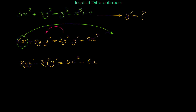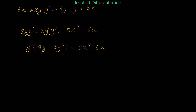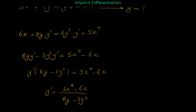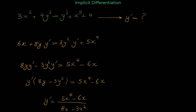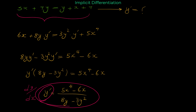After doing this, we can factor y prime on the left. Both terms have y prime, so factoring gives y′·(8y − 3y²) = 5x⁴ − 6x. So y prime, when we have this relation between x and y, is this expression.